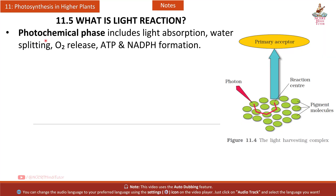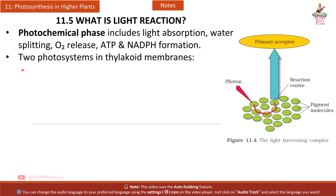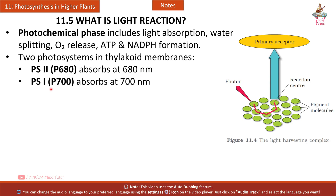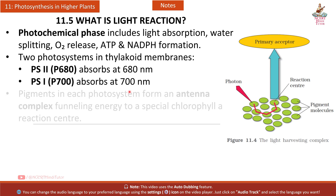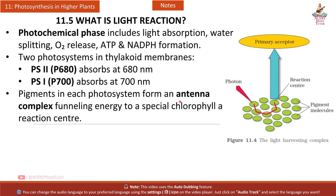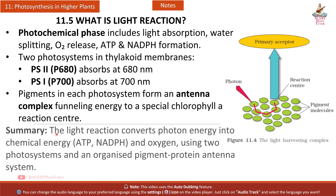Section 11.5 — Light reactions: the photochemical phase includes light absorption, water splitting, O2 release, and ATP and NADPH formation. Two photosystems sit in thylakoid membranes: PS2 (P680) absorbs at 680 nm and PS1 (P700) absorbs at 700 nm. Pigments in each photosystem form an antenna complex, funneling energy to a special chlorophyll A reaction center. The light reaction converts photon energy into chemical energy — ATP, NADPH, and oxygen.